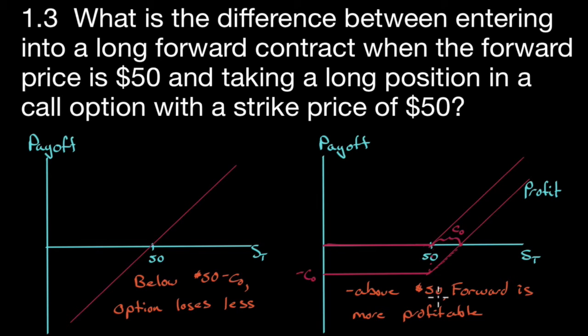So above 50, the forward is more profitable. If the price ends above 50, I wish I were in the forward. If you look over here, below 50 minus the premium, minus the premium on the call, the option loses less. Because if we extend the forward contract down, this point here where the loss is identical for the forward and for the option, this distance in here is the call premium.